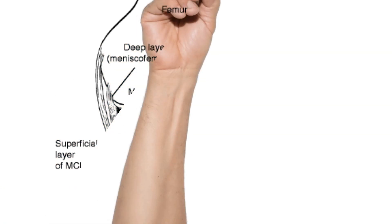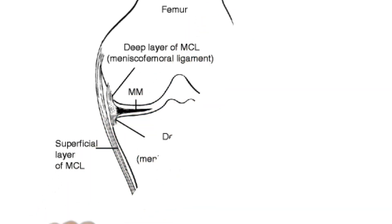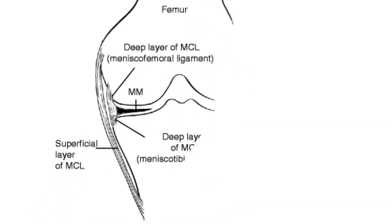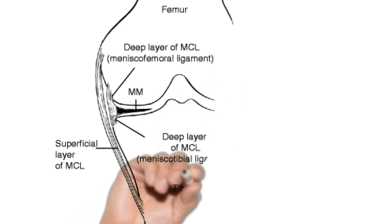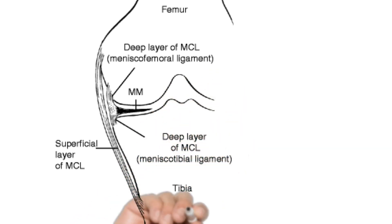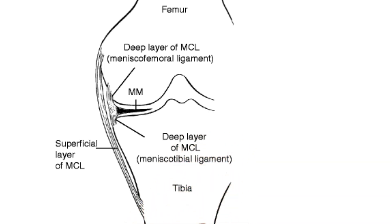The superficial MCL inserts into the periosteum just deep to the pes anserinus tendon. The deep MCL is a capsular thickening associated with the medial meniscus via the coronary ligament. The posterior fibers of the deep MCL blend with the posterior oblique ligament, which functions to resist internal rotation of the tibia in full extension.